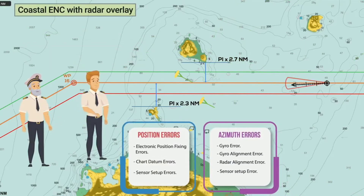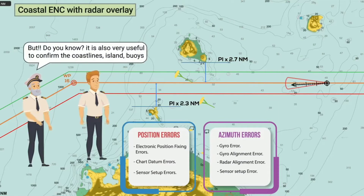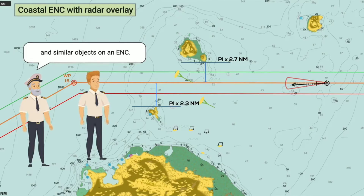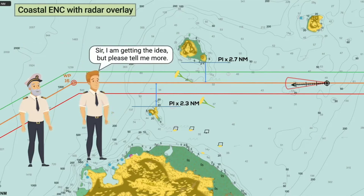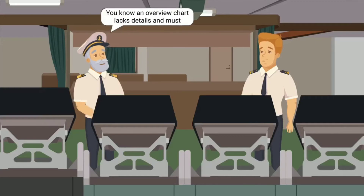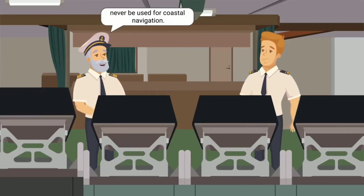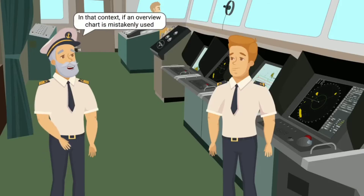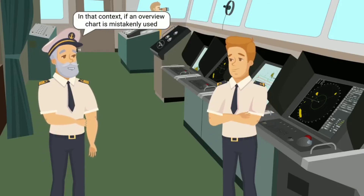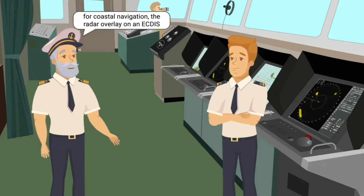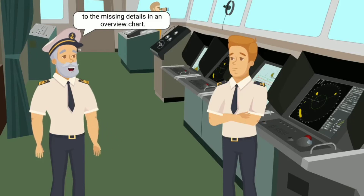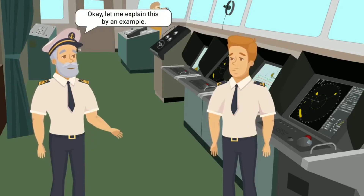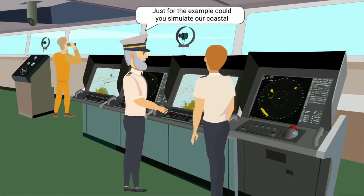But do you know it is also very useful to confirm the coastlines, islands, buoys, and similar objects on an ENC? I am getting the idea, but please tell me more. An overview chart lacks details and must never be used for coastal navigation — we learnt that from ECTIS Awareness Series number one. In that context, if an overview chart is mistakenly used for coastal navigation, the radar overlay on an ECTIS can help draw the attention of a navigator to the missing details. That's interesting, sir. How? Let me explain by an example.